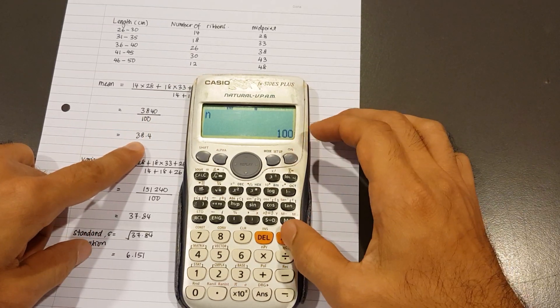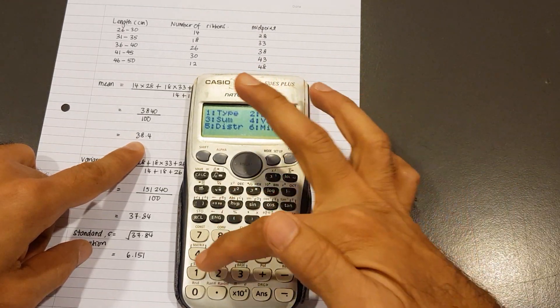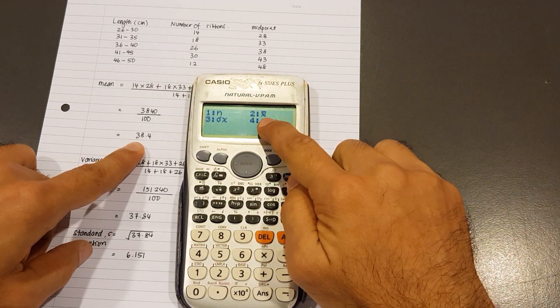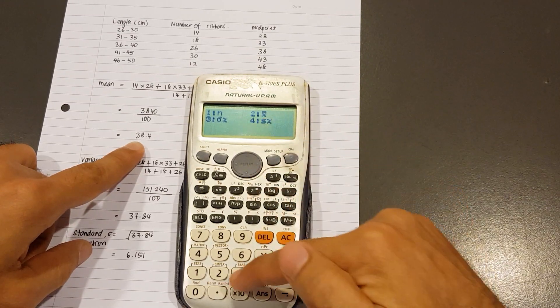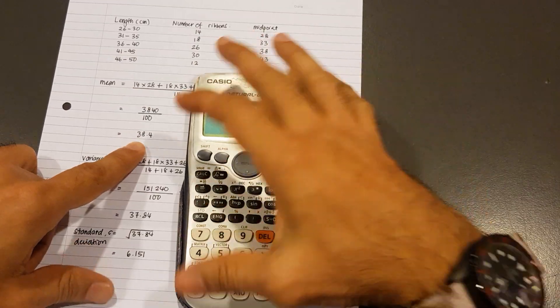Now for the mean answer. Again, I press Shift 1. We look at number 4. You see the symbol for the mean? That's number 2, x bar. So I type 2, press equals, and I get 38.4. That's the mean.